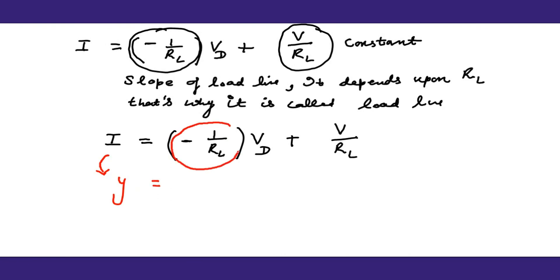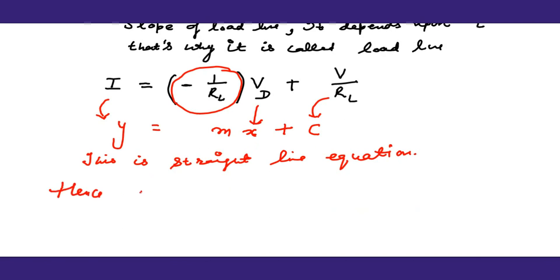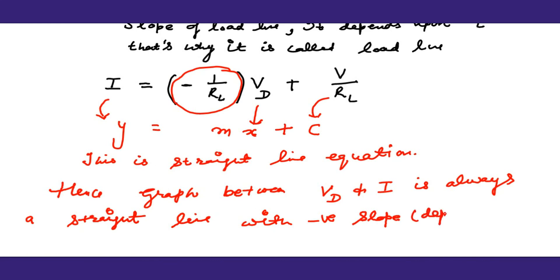Comparing this equation with y equals mx plus c (the equation of a straight line), if we plot current I against diode voltage Vd, the result is a straight line with a negative slope of minus 1 over Rl, with Vd along the x-axis and I along the y-axis.